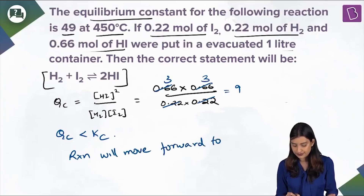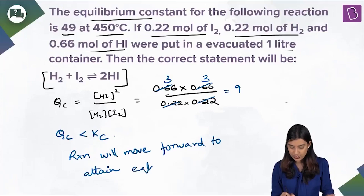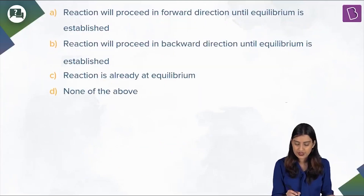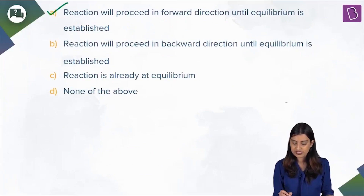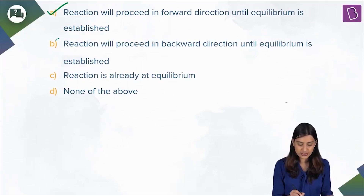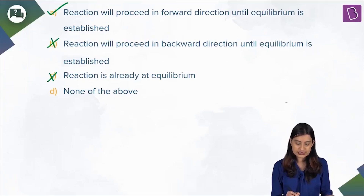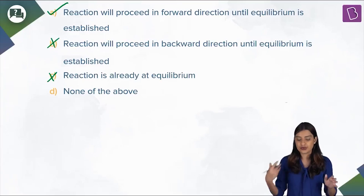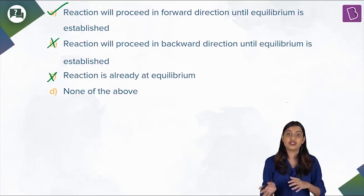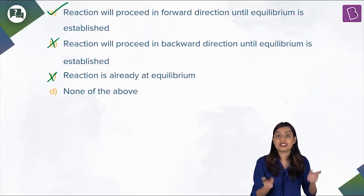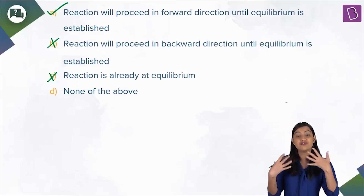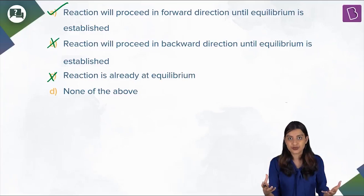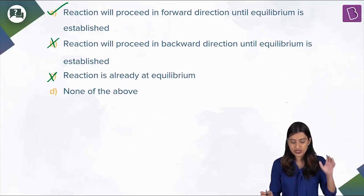Since Qc < Kc, the reaction has not reached equilibrium yet, so it must proceed in the forward direction to attain equilibrium. Option A says the reaction proceeds in the forward direction until equilibrium is established — that's correct. Option B (backward) and option C (already at equilibrium) are both wrong. The correct answer is option A.